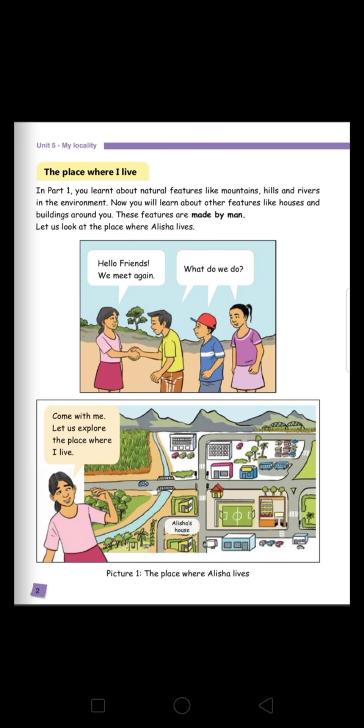Page 2 of the book — The place where I live. In Part 1, you learned about natural features like mountains, hills and rivers in the environment. Now you will learn about other features like houses and buildings around you. These features are made by men, so they are non-living things.